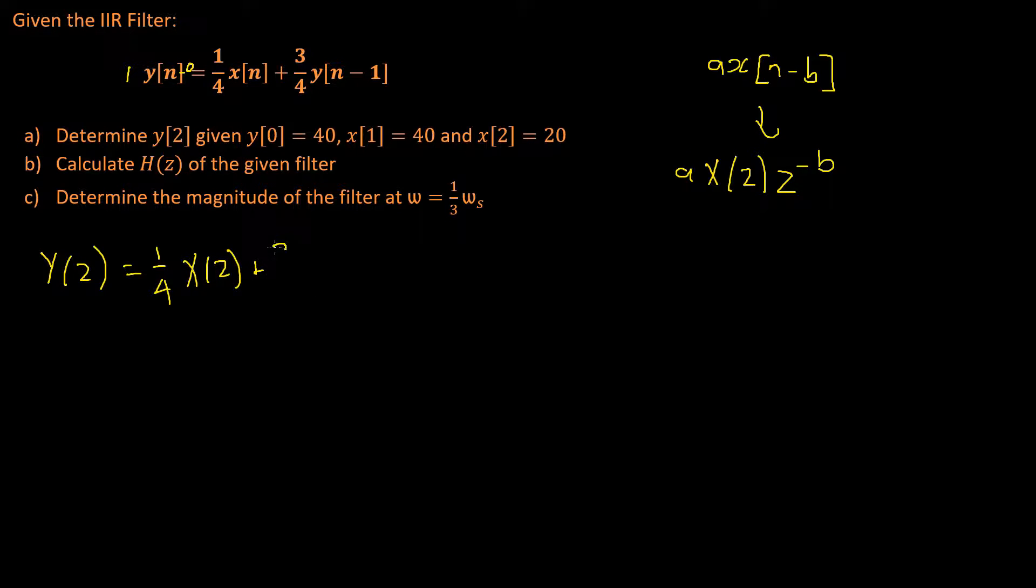Plus 3 quarters y, and then again our b value is just negative 1, which will become z, then z to the power of negative 1.